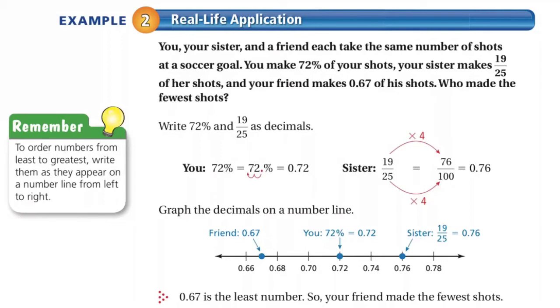Over on the remember, it says to order numbers from least to greatest, write them as they appear on a number line from left to right. You don't have to write a number line each time, but write them as they would appear on a number line from left to right.